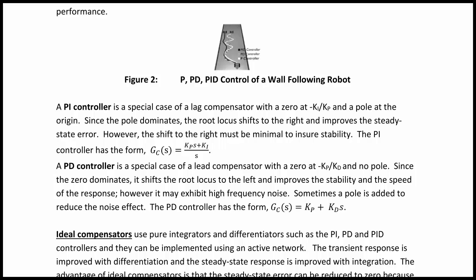A PI controller is a special case of a lag compensator with a zero at -ki/kp and a pole at the origin. Since the pole dominates, the root locus shifts to the right and improves the steady-state error; however, the shift to the right must be minimal to ensure stability. The PI controller has the form gc(s) = (kp*s + ki) / s.